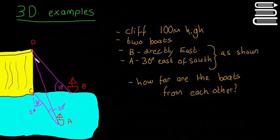We have a cliff here that's 100 meters high. There are two boats, the two red boats here, A and B. B is directly east from the cliff, so it's exactly straight over from this side on the cliff. And then A is 30 degrees east of south, so you go down south, then you go 30 degrees to the east, and that's where this boat is.